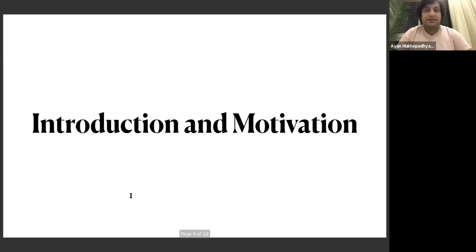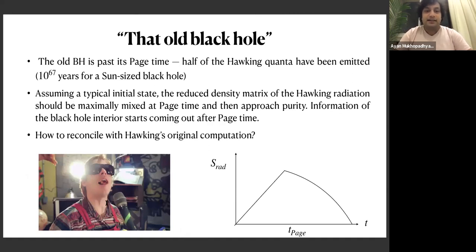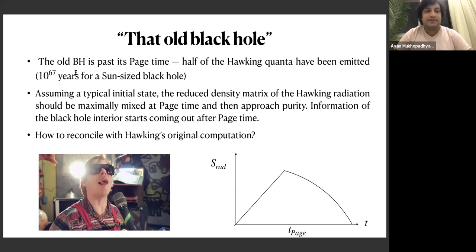The first part is the introduction. The title of the slide is taken from a song by an indie rock band called Dr. Dog — 'That Old Black Hole.' An old black hole is a black hole that has passed its Page time, which is the time when half of the Hawking quanta has been emitted. For an astrophysical black hole this is a hopeless timescale — for a Sun-sized black hole it would be 10^57 years, much larger than the age of the universe.